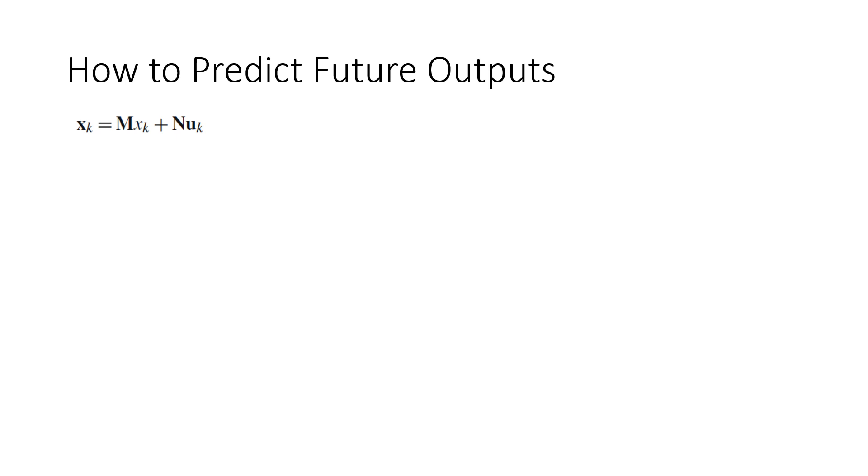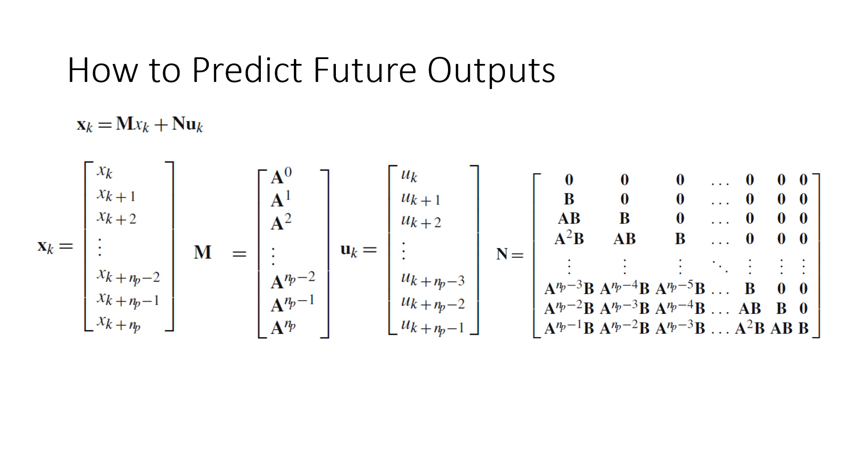We can rewrite the future time states in the matrix form shown, where the bolded vectors are the future states and the future inputs, and M and N are the prediction matrices shown. We can then determine any future state using the matrices in its row of the prediction matrices.